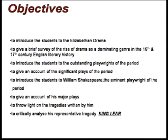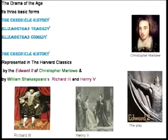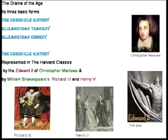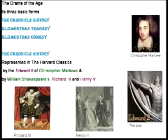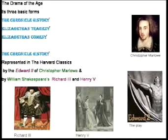To give an account of the major plays, throw light on the tragedies written by him, critically analyze his representative tragedy, King Lear. The drama of the age appeared in basically three forms: the chronicle histories, the tragedies and the comedies. The playwrights of the age developed this genre through their artistic skills and one after the other contributed in a great way to the development of this genre.